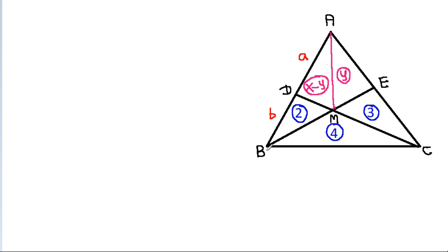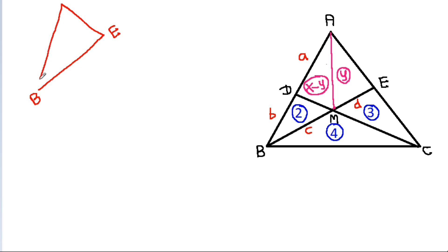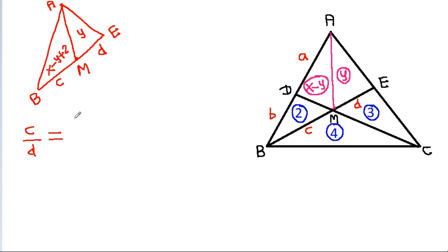Now suppose BM is C and EM is D. In triangle B, E, A with point M: BM is C and EM is D. This area is Y, and this area is X minus Y minus 2. So C divided by D equals X minus Y plus 2 divided by Y.